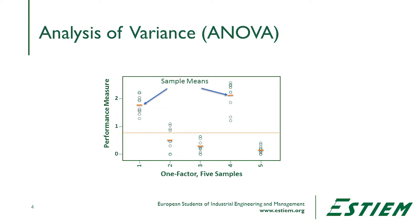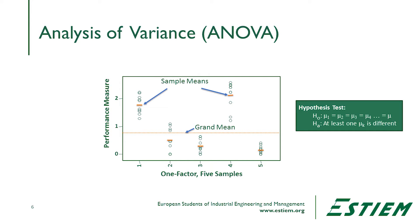Each of those samples has an average, and then we can calculate the overall average, called the grand mean, for all of them. The implicit hypothesis test is that the null hypothesis is there's no difference between mu1, mu2, mu3, mu4, or mu5. The alternative is that at least one of those subgroups is statistically different than the others.